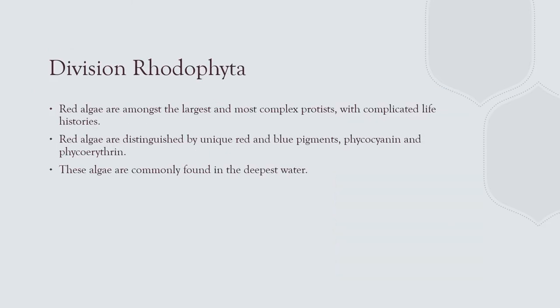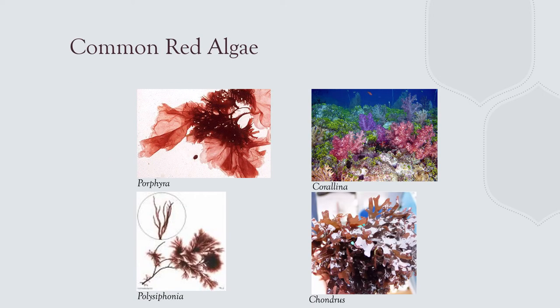Rhodophyta are very complex protists found in deeper water because red light is attenuated — they don't utilize red light, which is why they look red; they reflect it. They're adapted for deeper living than the other two algae groups. Polysiphonia and Chondrus are examples — Chondrus is harvested for ice cream. Porphyra, also called nori in Asia, is used in sushi and darkens when dried to make wraps. Corallina impregnates its cell structures with calcium carbonate, making it almost like a little piece of coral.